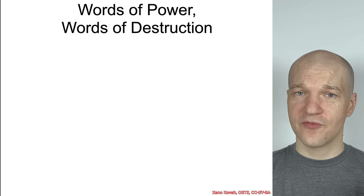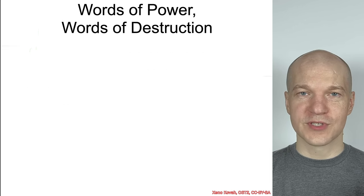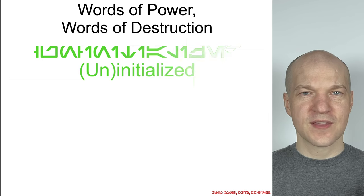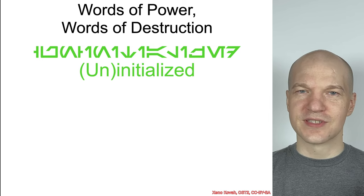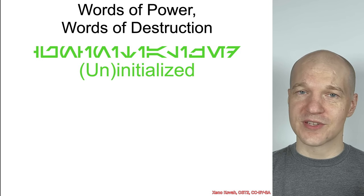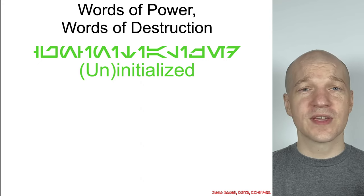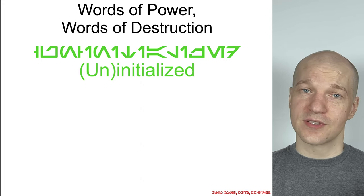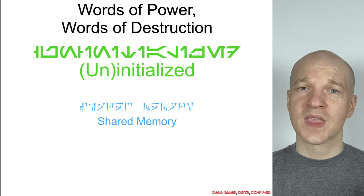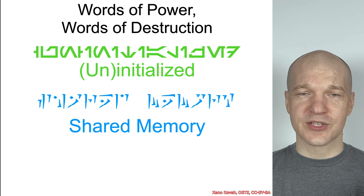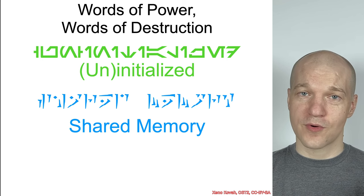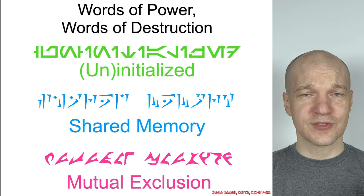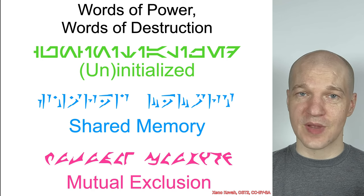But we do have a few new words of power — things that attackers should concern themselves with because they potentially give an attacker an advantage. Things like uninitialized memory. Things like shared memory, or the lack of mutual exclusion on shared memory — that could be a problem.